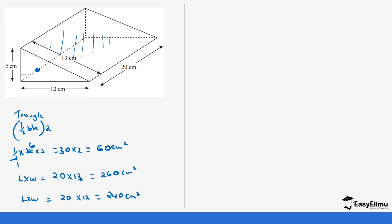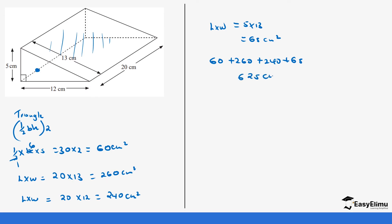Finally we have a rectangle on the side with width 5 and length 13. So once again it's length times width, which is going to be 5 times 13, and 5 times 13 gives us 65. So we add all the areas: 60 plus 260 plus 240 plus 65, which gives us 625 centimeters squared.